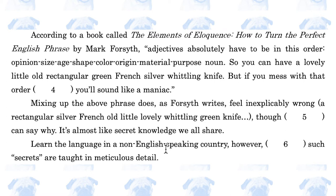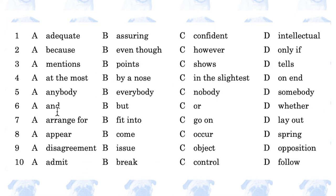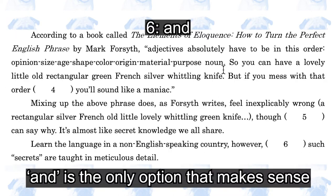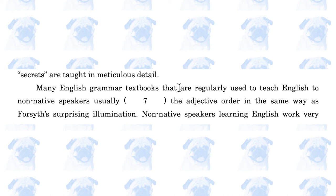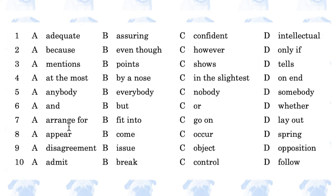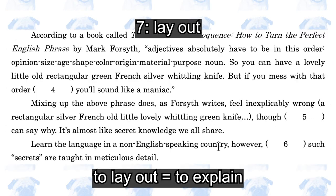Learn the language in a non-English speaking country, however. Blank such secrets are taught in meticulous detail. The options are: and, but, or, whether. The answer is 'and,' because none of the other options make sense. Many English grammar textbooks that are regularly used to teach English to non-native speakers usually blank the adjective order in the same way as this person's surprising illumination. The options are: range for, fit into, go on, lay out. The answer is D, lay out. In this context, to lay out something is to explain it in detail — so these textbooks explain the adjective order in detail.